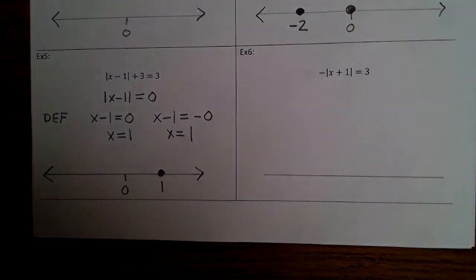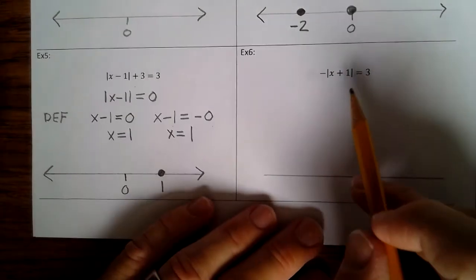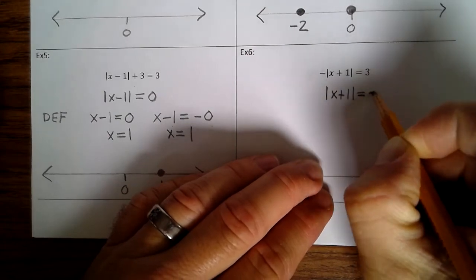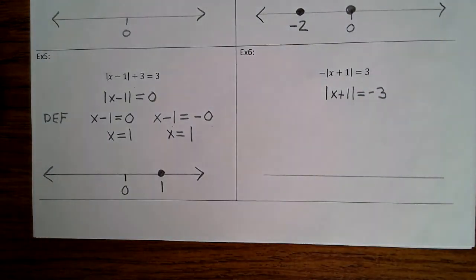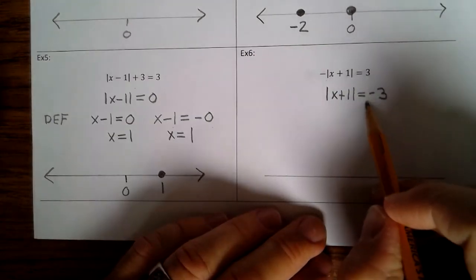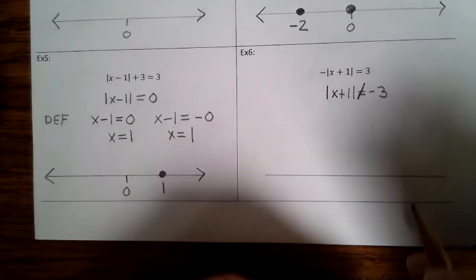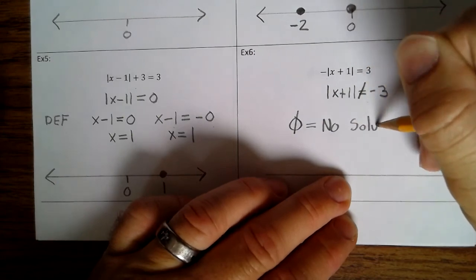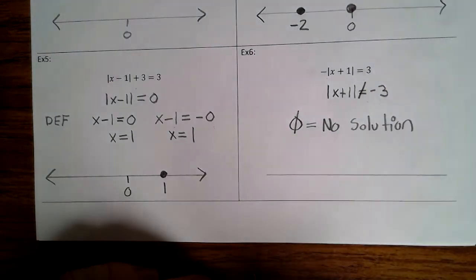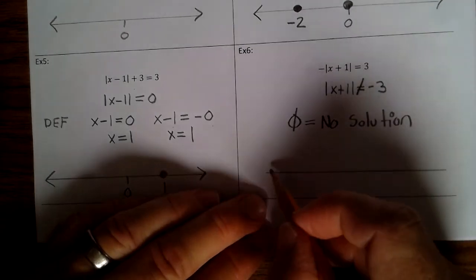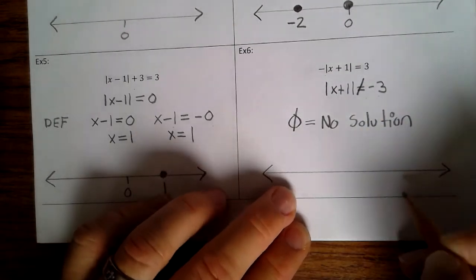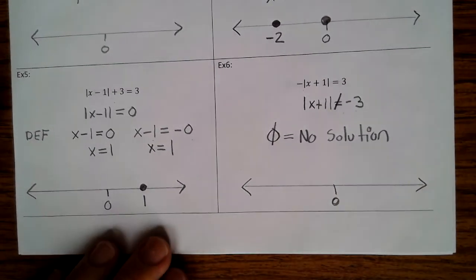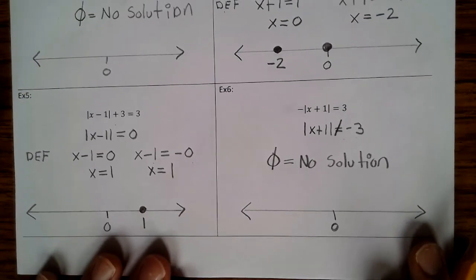All right, let's take a look at example 6. The first step is isolate the absolute value. We're going to divide by negative 1, so that's the absolute value of x plus 1 equal to negative 3. Remember, the absolute value of a number will never and can never equal a negative number. So that is no solution — there are no points on the number line. Go ahead and finish up example 6.